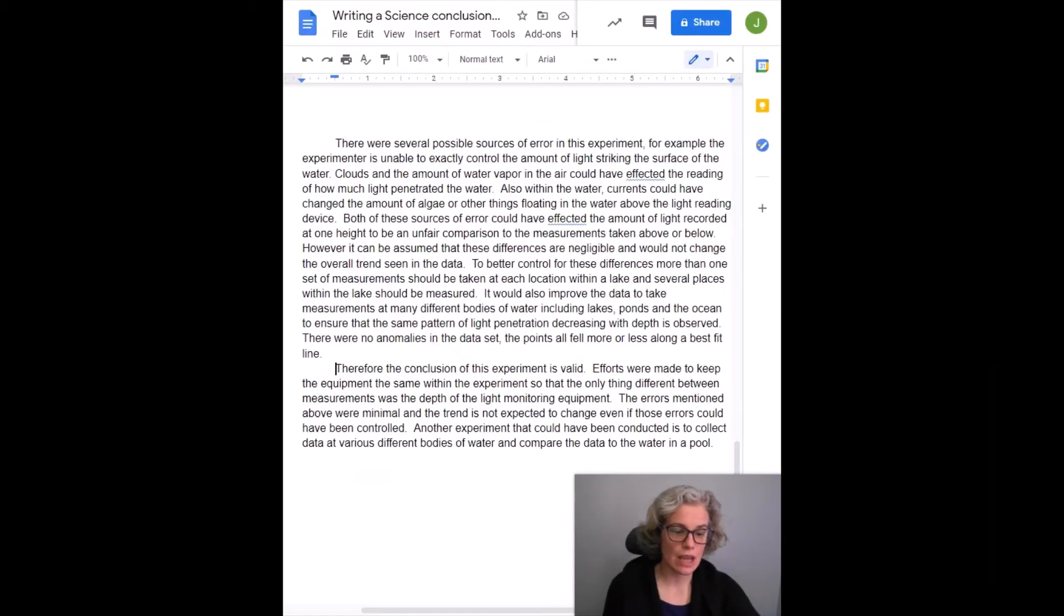So now we just need to talk about the validity and future experiments that could be conducted. Here's a possible ending to this paragraph: Another experiment that could have been conducted is to collect data at various different bodies of water and compare the data to water in a pool. Again, because we didn't actually conduct this experiment, there's some variety in what we could have put here.